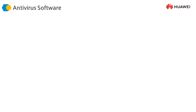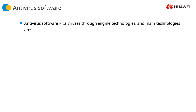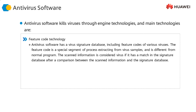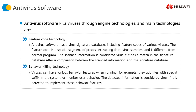Antivirus software running on servers or hosts is more powerful — it can not only detect viruses but also clean and remove them using different technologies. Two major technologies are used by antivirus software: feature code technology, which uses a signature database to detect and remove viruses; and behavior-based technology, which detects a virus based on what the virus is doing. Feature code technology detects a virus based on what it looks like — its signature — while behavior-based technology detects a virus based on the functions it is performing.